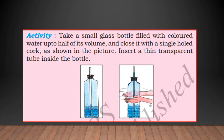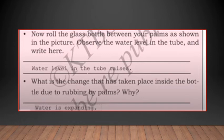Next activity. Take a small glass bottle filled with colored water up to half of its volume and close it with a single hole cork as shown in the picture. Insert a thin transparent tube inside the bottle. You can do these things in the science labs. Now roll the glass bottle between your palms as shown in the picture. Observe the water level in tube. What happened? It rises. The colored water now rises through that straw or the pipe in the middle. Water level in the tube rises. What is the change that has taken place inside the bottle due to rubbing by palms? Water is expanding. That is why it comes up through the pipe. From the above activity we understood that the matter gets changed when heated. Matter expands on heating. Hence solid, liquid, gases expand on heating.